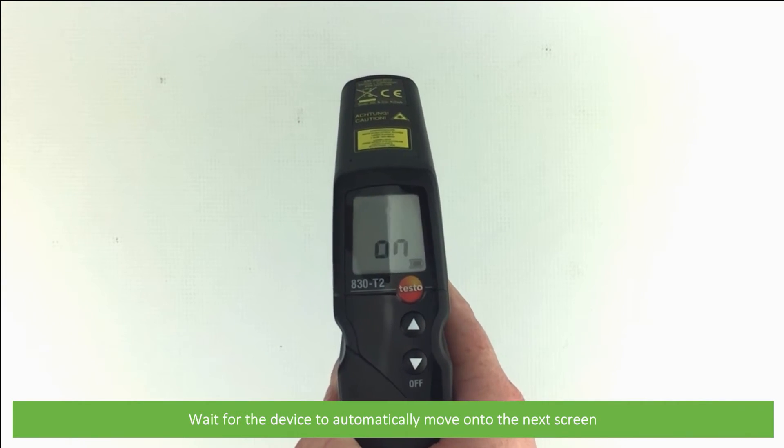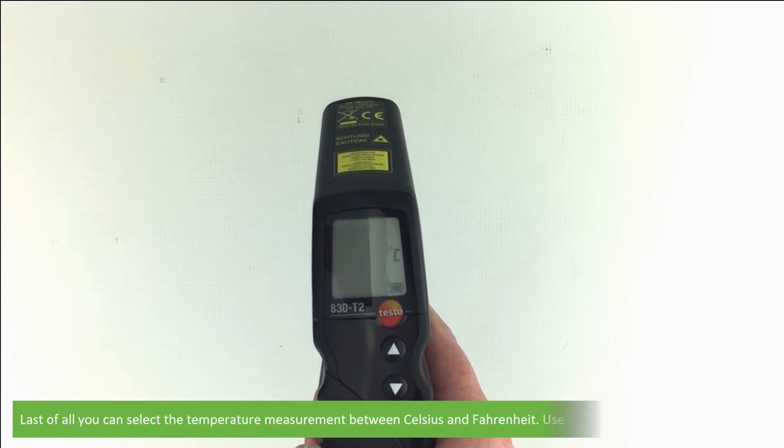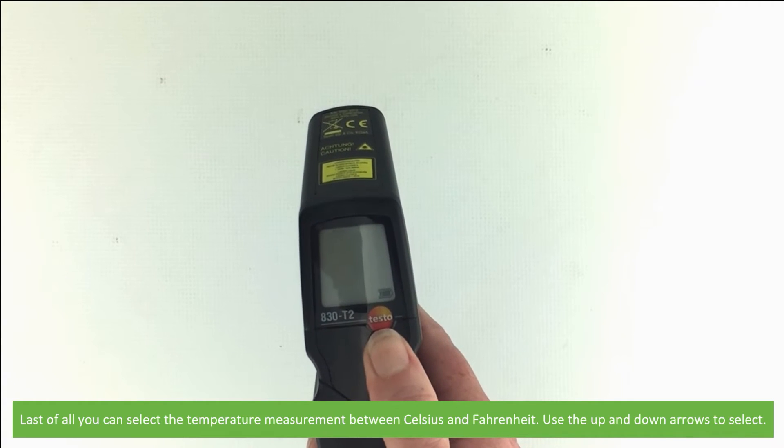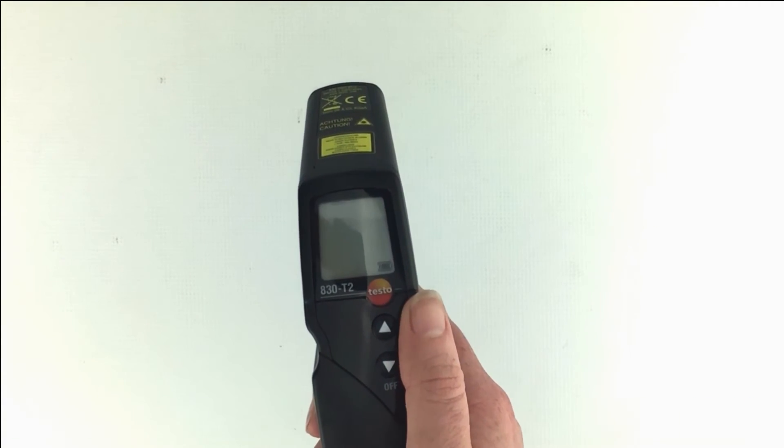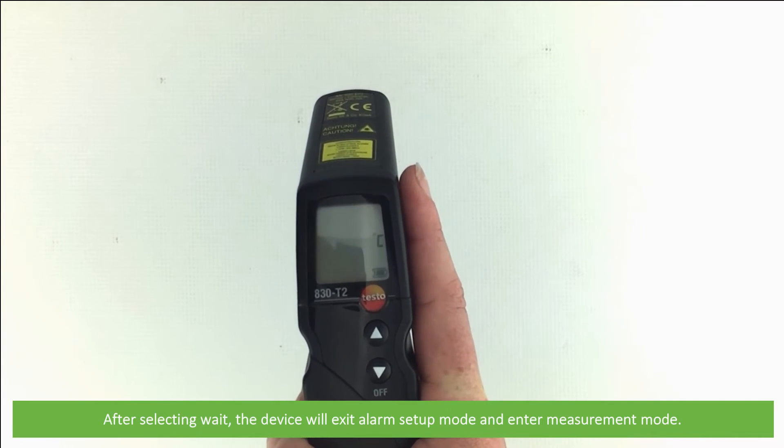Wait for the device to automatically move onto the next screen. Last of all you can select temperature measurement between Celsius and Fahrenheit. Use the up and down arrows to select. After selecting wait. The device will exit alarm setup mode and enter measurement mode.